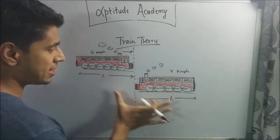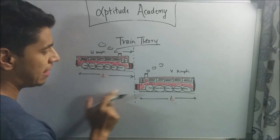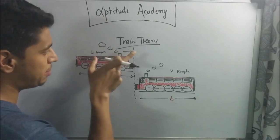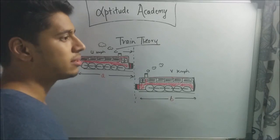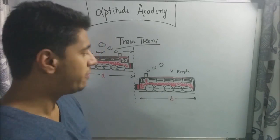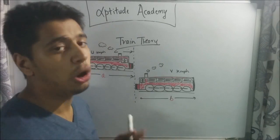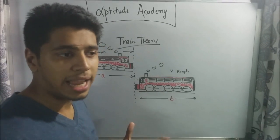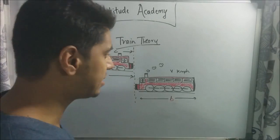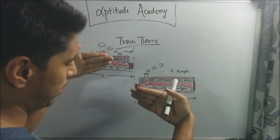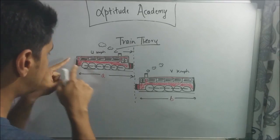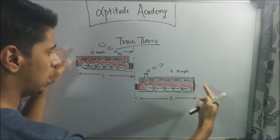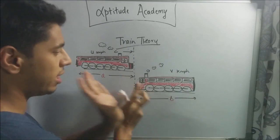Now we've got two trains moving in opposite directions: train of length A at speed U, and train of length B at speed V. A very common problem asks: what is the time taken for these two trains to cross each other? They've crossed when the back edge of one passes the back edge of the other — when the trailing edges coincide.